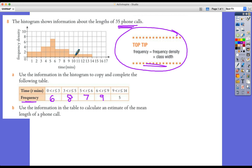And then the last one's been done for us. We could double check it. It's got a class width of 5 and a height of 1, frequency density of 1. So 5 times 1 would give us 5.